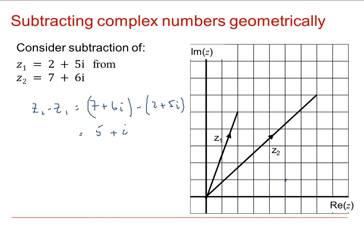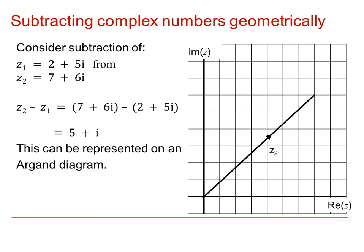And the vector representing that is in here. This is going to be the vector for z2 minus z1. Well how do we get that result? Well if we look at the vector which is negative of z1, we can see that z2 plus negative z1